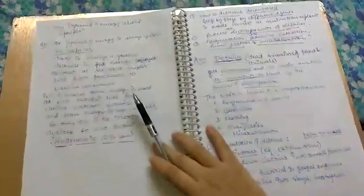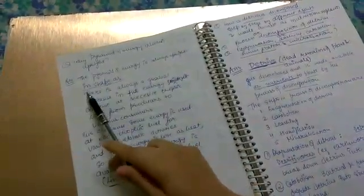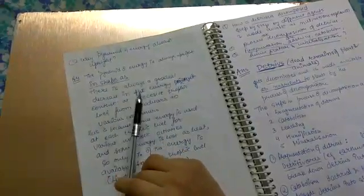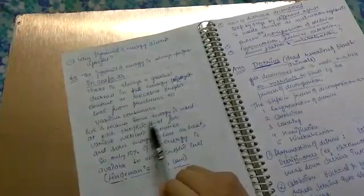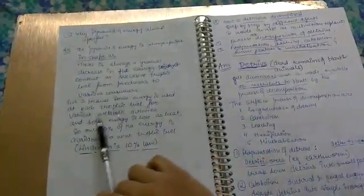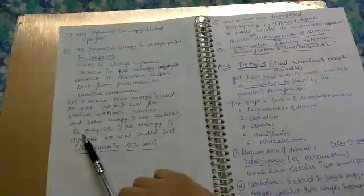Next is, why is the pyramid of energy always upright? Pyramid of energy is upright in shape as there is always a gradual decrease in energy content at successive trophic levels from producers to various consumers. This is because some energy is used at each trophic level for various metabolic activities and some energy is lost as heat.